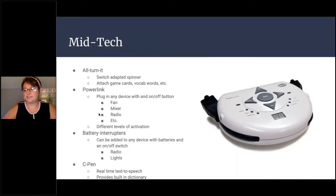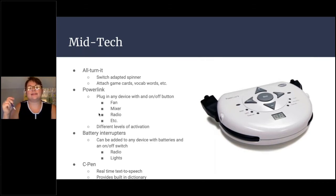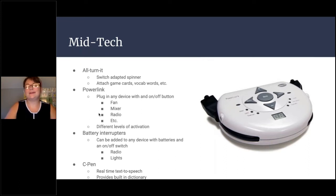The last mid-tech option we just got at Valley is called the CPEN. It provides real-time text-to-speech — it looks just like a typical pen and you roll it over text to get speech output. You can plug headphones right in, it's really discreet so some of our high school students use it. It also has a built-in dictionary and you can set it to test mode so students can't use extra features during an exam.